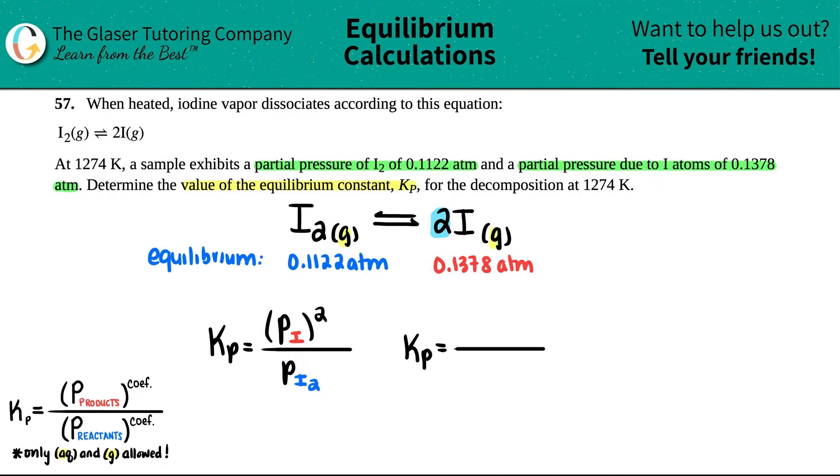All we're going to do is take the 0.1378 and that's squared, then divided by the 0.1122. I think we can get this one in one shot. We're just going to get the number: 0.1378 squared, then divide by 0.1122. Looks like I got four sig figs, so I'm going to put my answer in four sig figs: 0.1692.